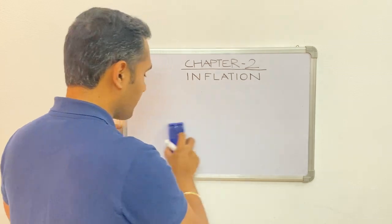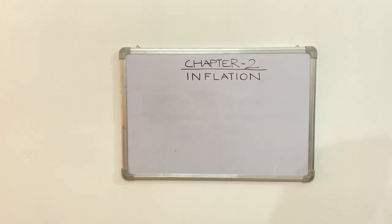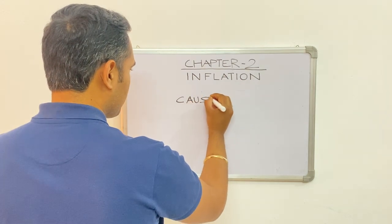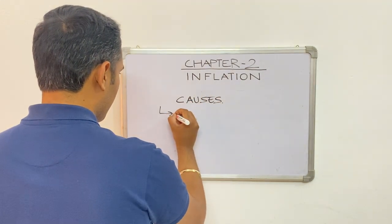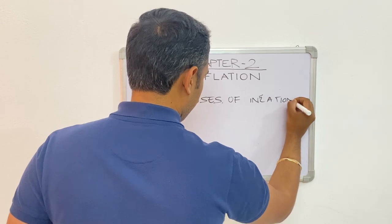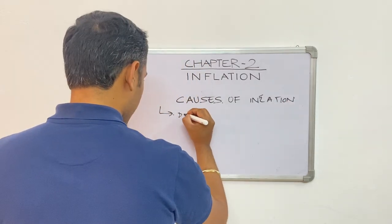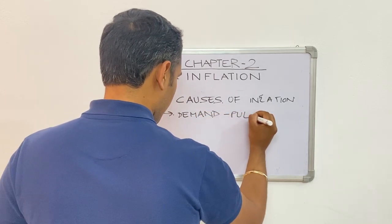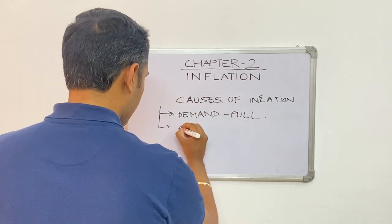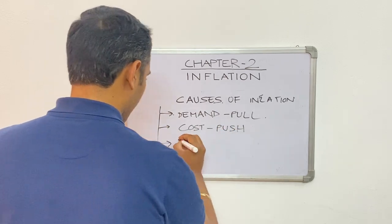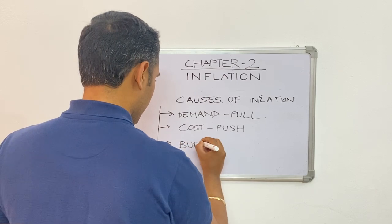Now let's look at the causes of inflation. There are three major causes: first is demand-pull inflation, second is cost-push inflation, and third is built-in inflation. These are the three major causes of inflation.